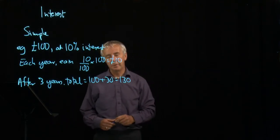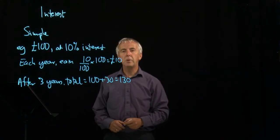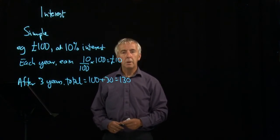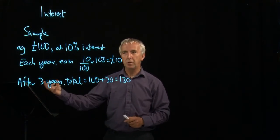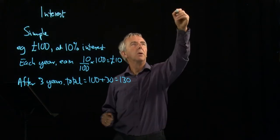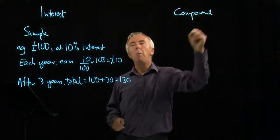So it's very simple to work out, but it's a bit unfair because after one year you've actually got £110 and the bank's only paying you for the original 100. So a better way of dealing with this is to use what's called compound interest.